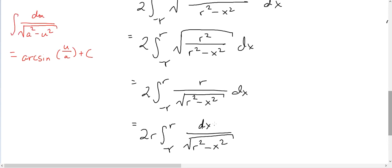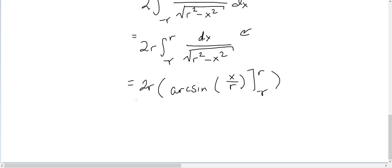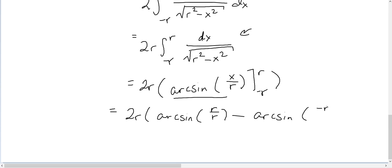This matches the arcsine form with a = r and u = x. So the result is 2r times arcsin(x/r) evaluated from −r to r. Evaluating: arcsin(r/r) minus arcsin(−r/r), which is arcsin(1) minus arcsin(−1).